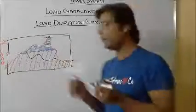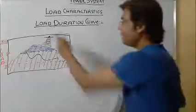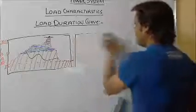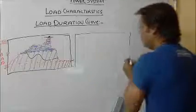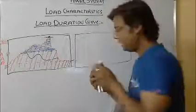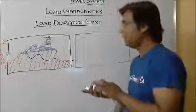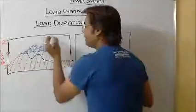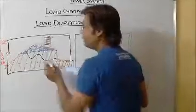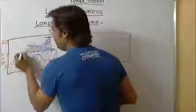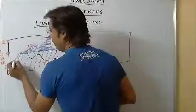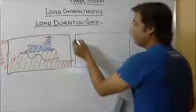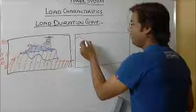Suppose here is the maximum demand. I can have the load duration curve of the system such that I can have 3 points. This is the maximum demand — suppose here it is 60, here it is 50, here it is 40 — so you can have 100 megawatt.